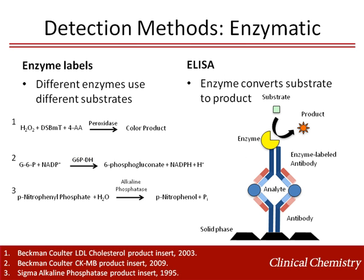The most common enzyme-based antibody labels include alkaline phosphatase, peroxidases, glucose-6-phosphate dehydrogenase, and beta-galactosidase. Enzymatic immunoassays are advantageous due to the amplification inherent to the enzymatic process. The substrate-to-product reaction can produce a colored product, fluorescent product, a photon, or even an intermediate substrate for a second enzymatic reaction.